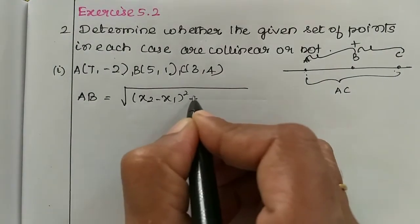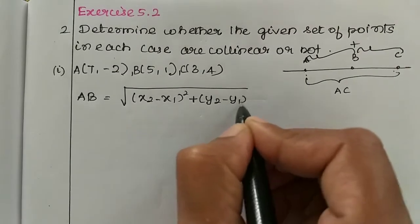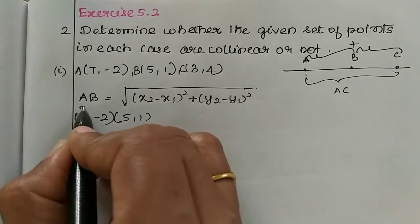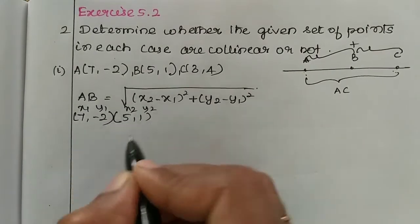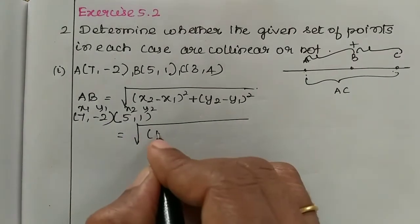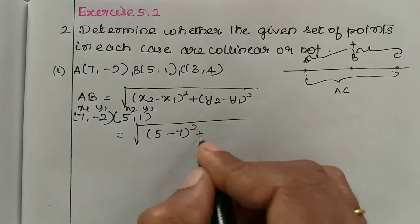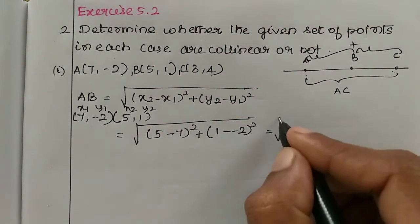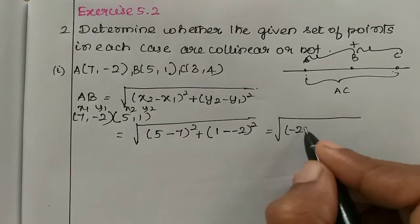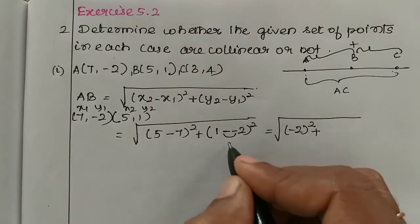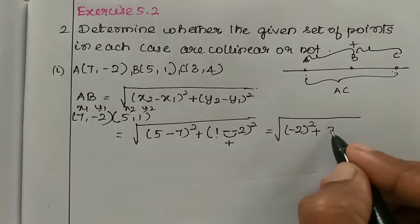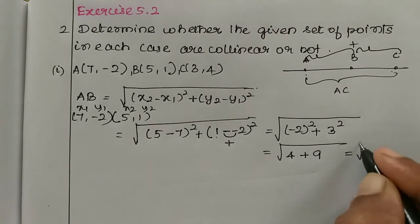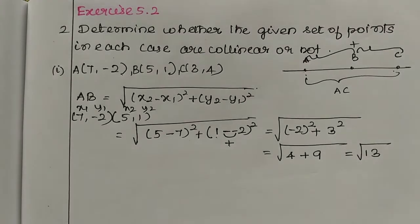Using the distance formula at least once: root of (x2 minus x1) whole square plus (y2 minus y1) whole square. So AB equals root of (5 minus 7) minus 2, the whole square, plus (1 plus 2) equals 3, the whole square. So 2 squared is 4, plus 3 squared is 9, which equals root 13.